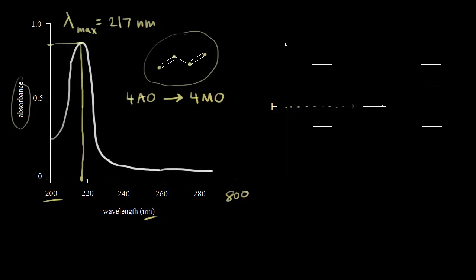Focusing on the energy diagram: the bonding molecular orbitals are lower in energy than the antibonding ones. These two lower orbitals are our bonding molecular orbitals, and the upper two are the antibonding molecular orbitals — energy increases upward. Looking at the dot structure of butadiene, we have two pi electrons here and two pi electrons here, for a total of four pi electrons.